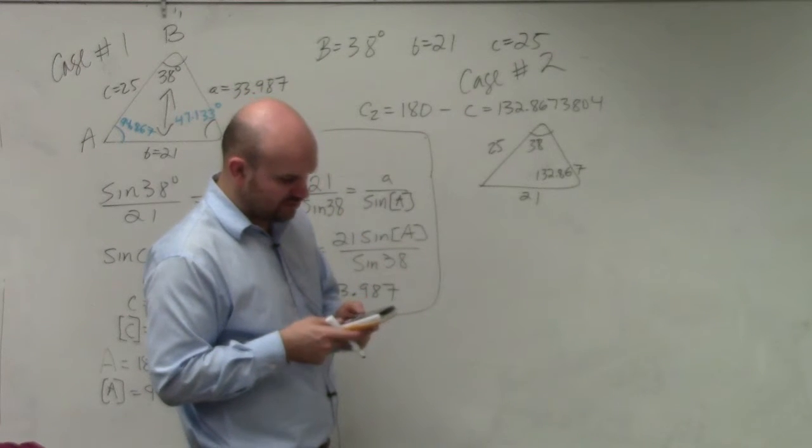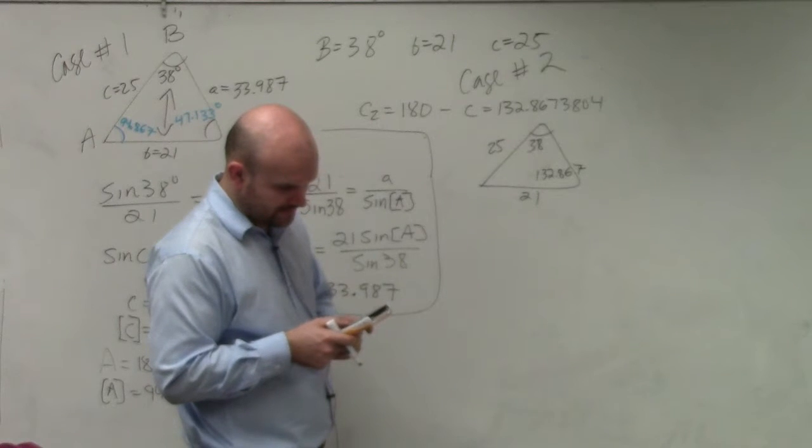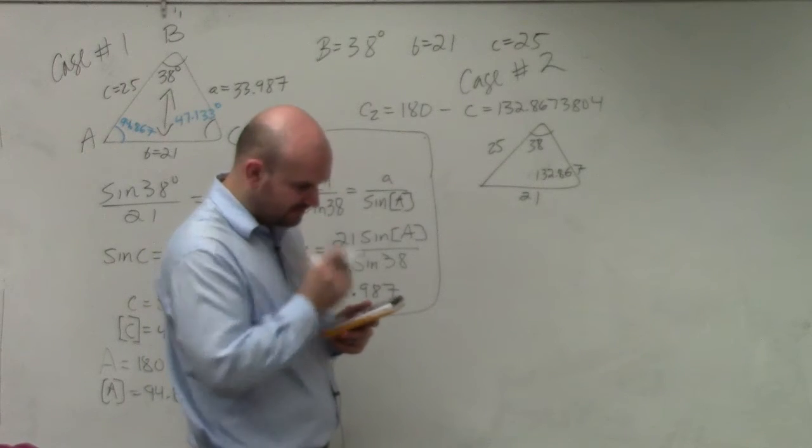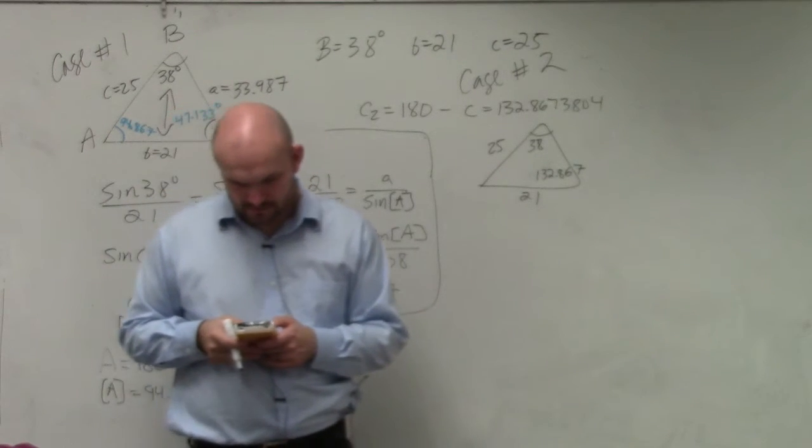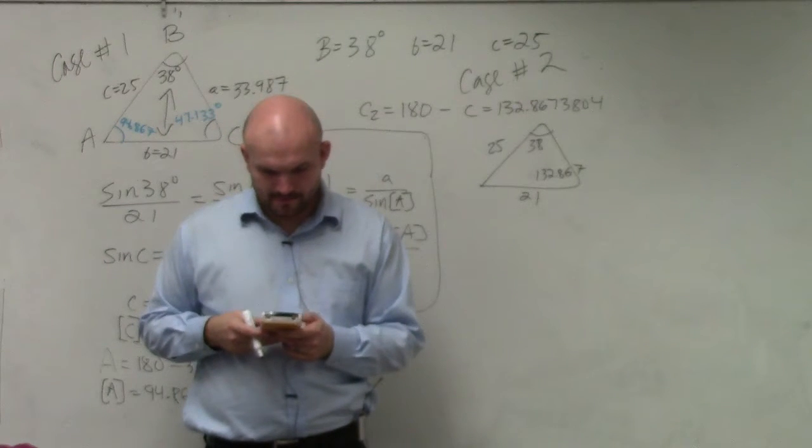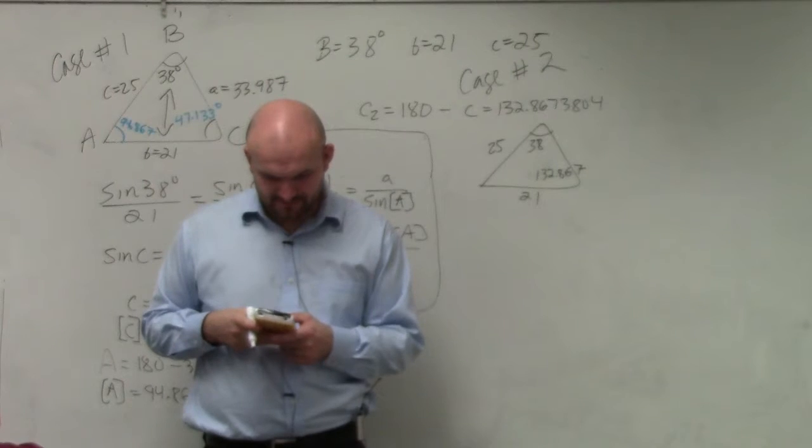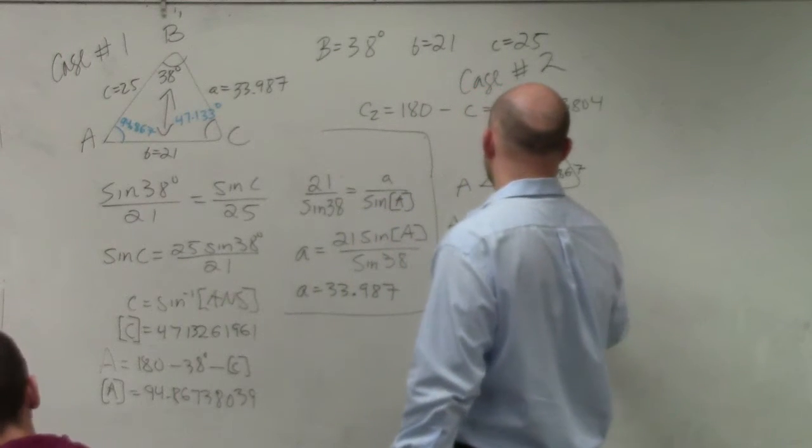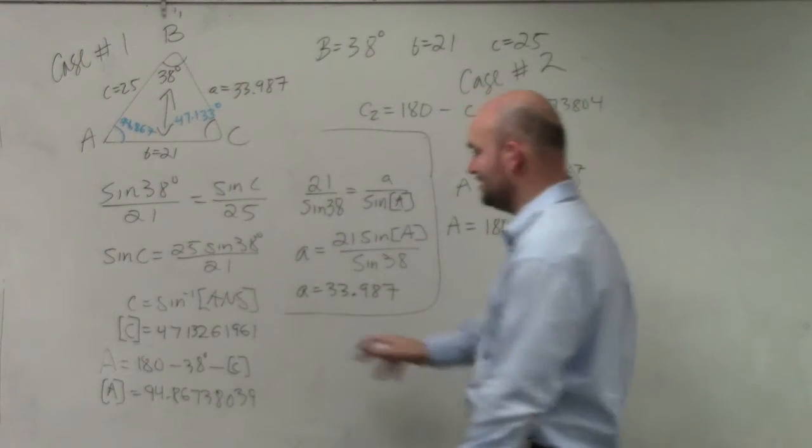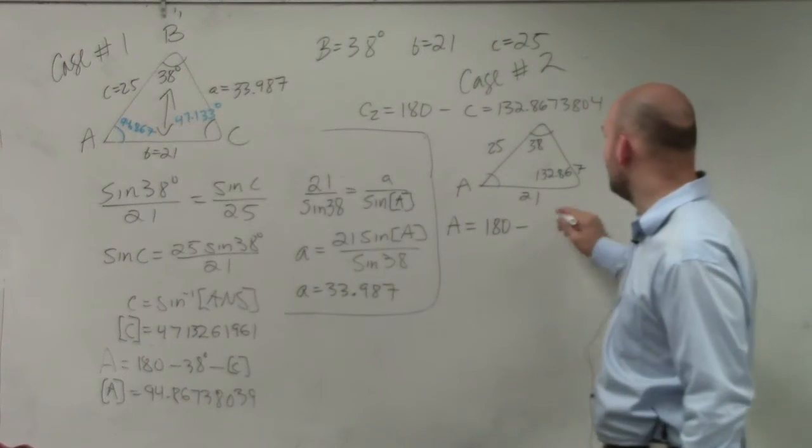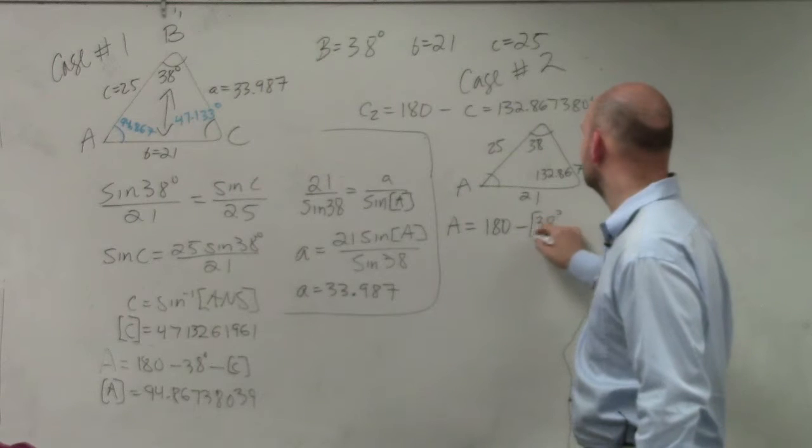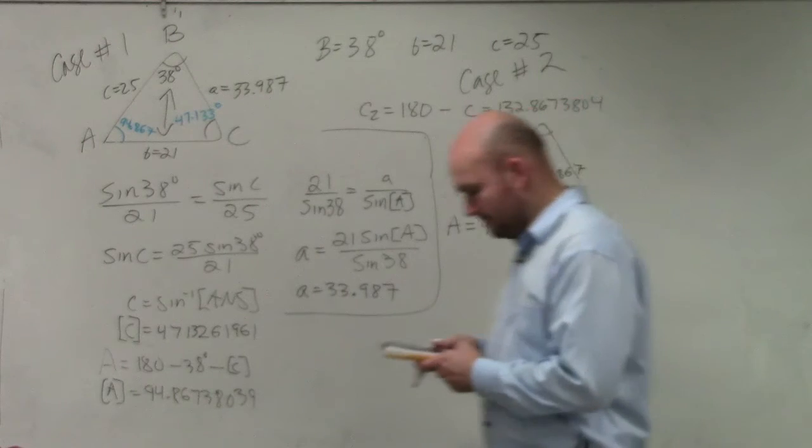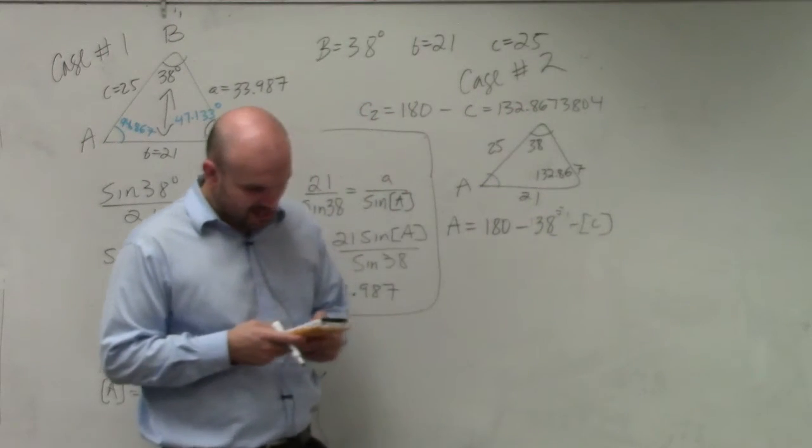So I do 180 minus alpha C, and that gives me 132. So that's going to be C2, but I'm going to store this as my new C. So I'll do alpha C. Store as alpha C. Now to figure out what A is, A is going to equal 180 minus my new stored C. I already did that over there, but I'm going to do that one more time with my new C.